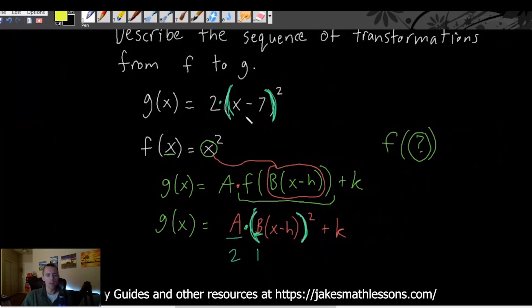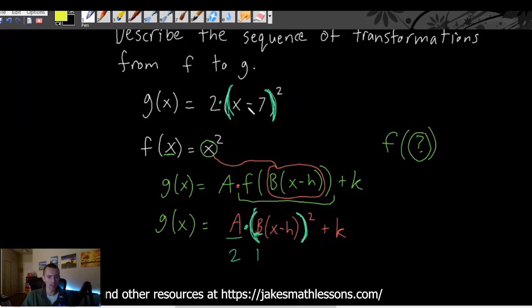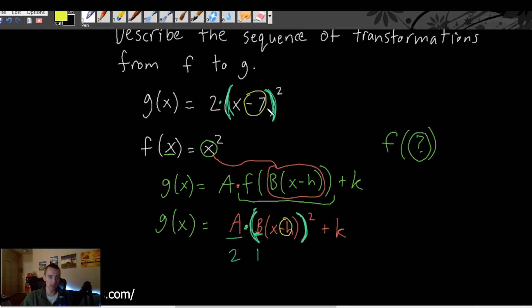Okay then the thing we have x plus or minus some number - we have basically x minus 7. That tells us that our minus h is minus 7, so our h must be 7. Okay and then we don't have any number being added or subtracted out here. So basically our k is a 0.